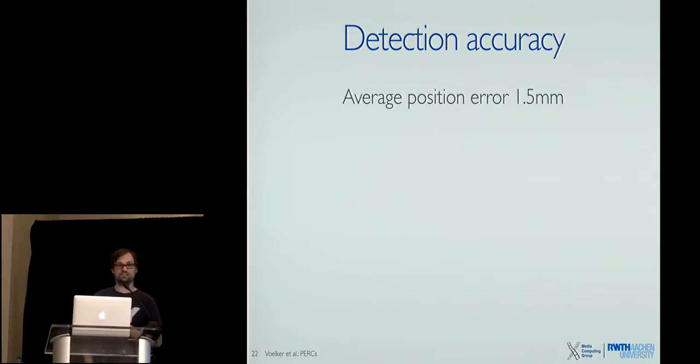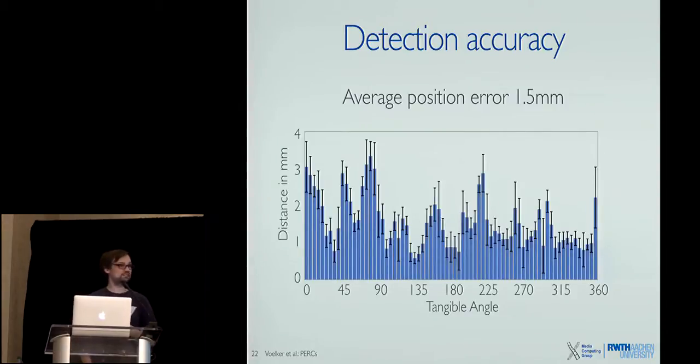The average position error is 1.5 millimeters, so from the position that's actually kind of good. But if we look at the data for the different angles, it suggests somehow that this depends on the orientation of the tangible. So if we account for that in our error correction, this could be a thing that could be improved even further, the detection rate.